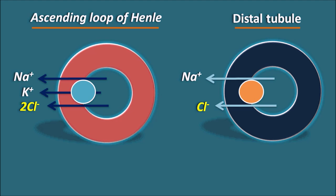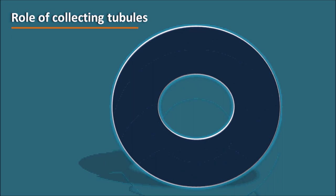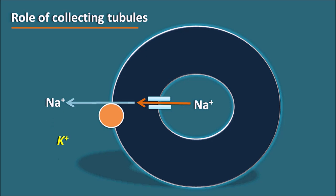At the collecting tubules, sodium is not reabsorbed through pumps but through specialized sodium channels on the apical membrane. Once sodium is within the membrane, it is transported out by the sodium-potassium ATPase pump at the basolateral membrane — common to all nephron locations. As sodium is reabsorbed, potassium enters the membrane and, since there is no other mechanism at the collecting tubules, potassium is secreted into the lumen and lost from the body.